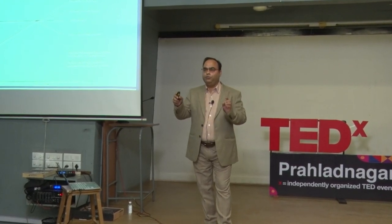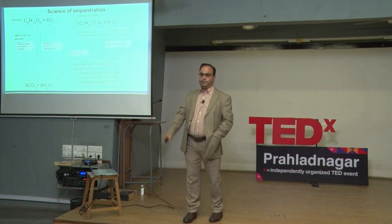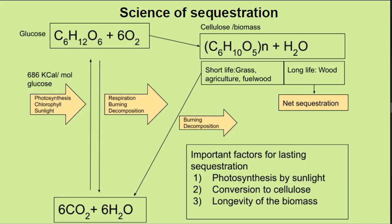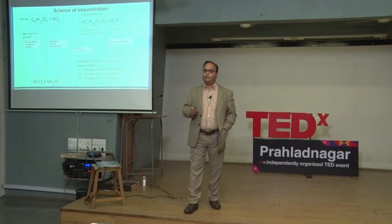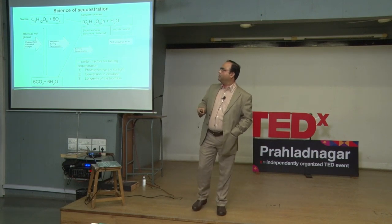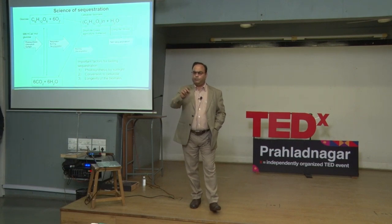Coming to the second point — this is important. The equation I am showing is probably the first equation you learned in your life, taught in class three and four. We all know that trees sequester CO2 and give out oxygen through photosynthesis. The process: carbon dioxide plus water, in the presence of sunlight and green plants, converts to glucose and oxygen. This is photosynthesis.